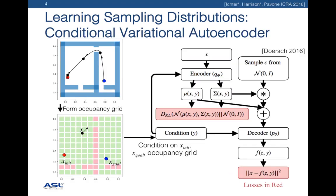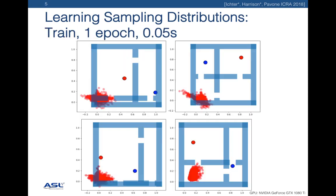The problem is first decomposed into a conditioning vector — in this case an occupancy grid and the initial and goal states. The CVAE then takes as input sample points from the successful solutions and learns to reconstruct the distribution of the solutions. The network architecture is standard for a CVAE.